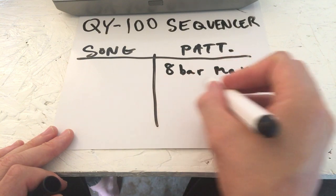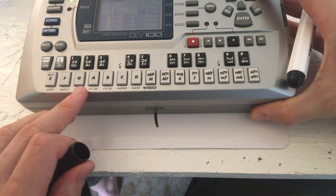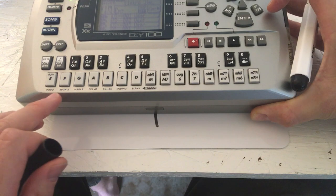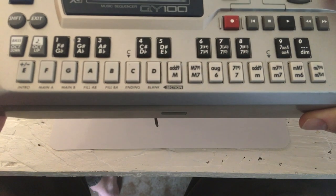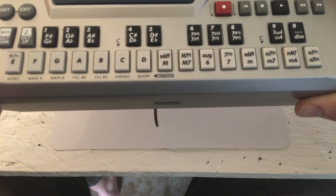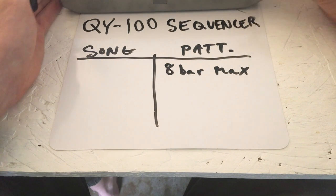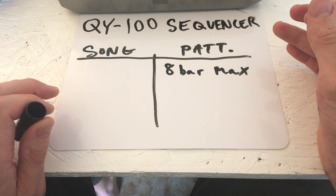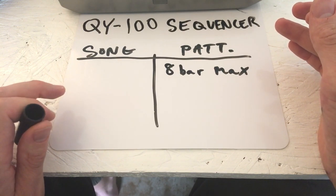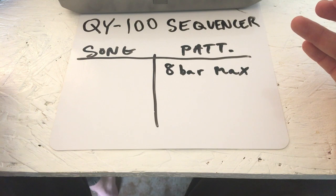So, eight bars per pattern. And then there are six sections — the paint-by-numbers suggestion is intro, main A, fill from section A to section B, fill from section B back to section A, and an ending. When I started embracing that pattern for my workflow, it ended up being pretty eye-opening — it's reductive, but it makes you realize how simple pop music is.